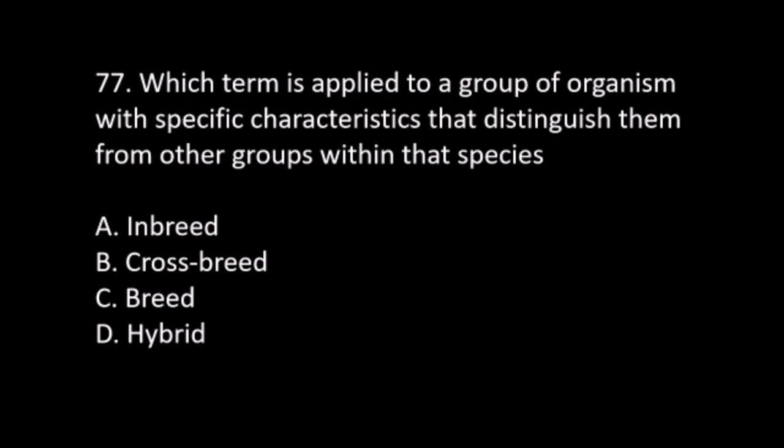Number 77. Which term is applied to a group of organisms with specific characteristics that distinguish them from other groups within that species? A. Inbreed. B. Crossbreed. C. Breed. D. Hybrid. The answer is C. Breed.